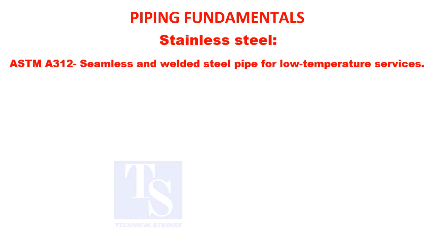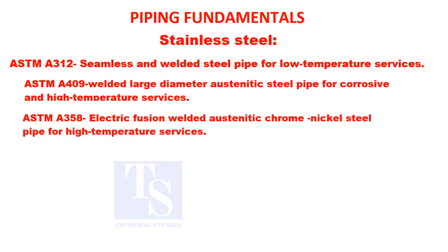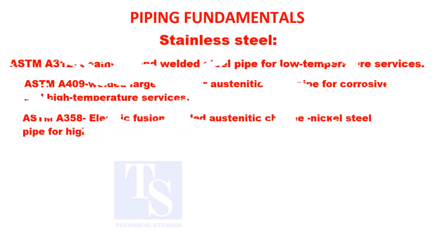ASTM A-358: electric fusion welded austenitic steel pipe for corrosive and high temperature services. ASTM A-106: steel pipe for low alloy steel. ASTM A-358: electric fusion welded austenitic chrome nickel steel pipe for high temperature services.